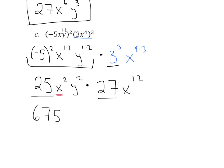And now we've got x squared times x to the 12th. Remember, the product rule says we are going to add those. So it's going to be x to the 2 plus 12 up here.